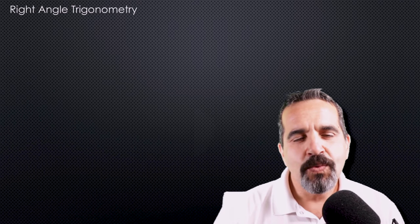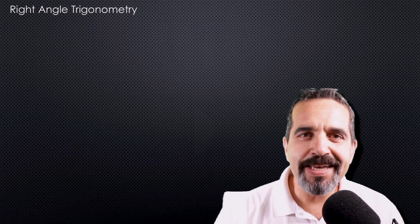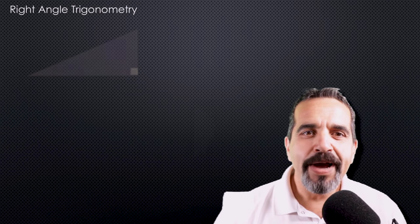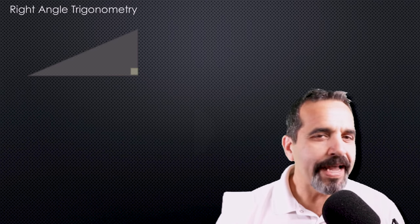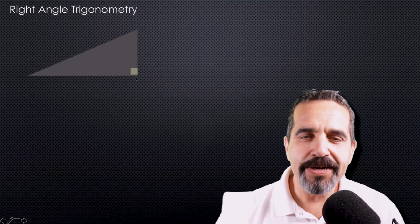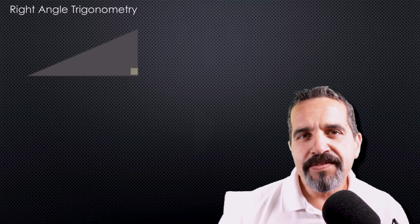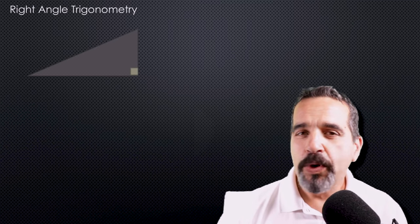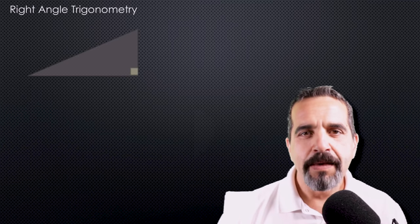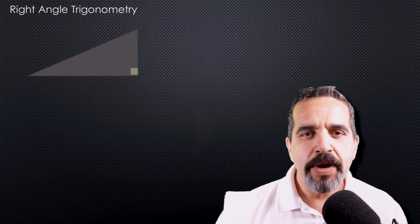Alright, calculating Power Factor — let's get right into it. The first thing we need to understand about Power Factor is a little bit about right-angle trigonometry. I know it sounds difficult, but it's really not that bad. We're going to look at a right-angle triangle. You can see it's a right angle by the 90-degree angle here. We need to understand what each side of the triangle is and what some of the trigonometric functions are. We don't need to know all of them, just some of them.